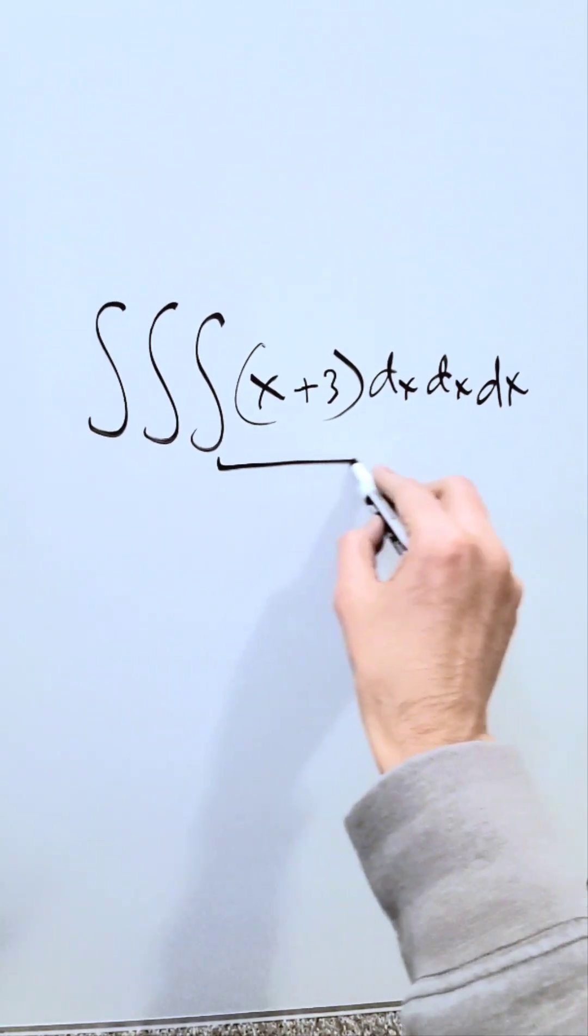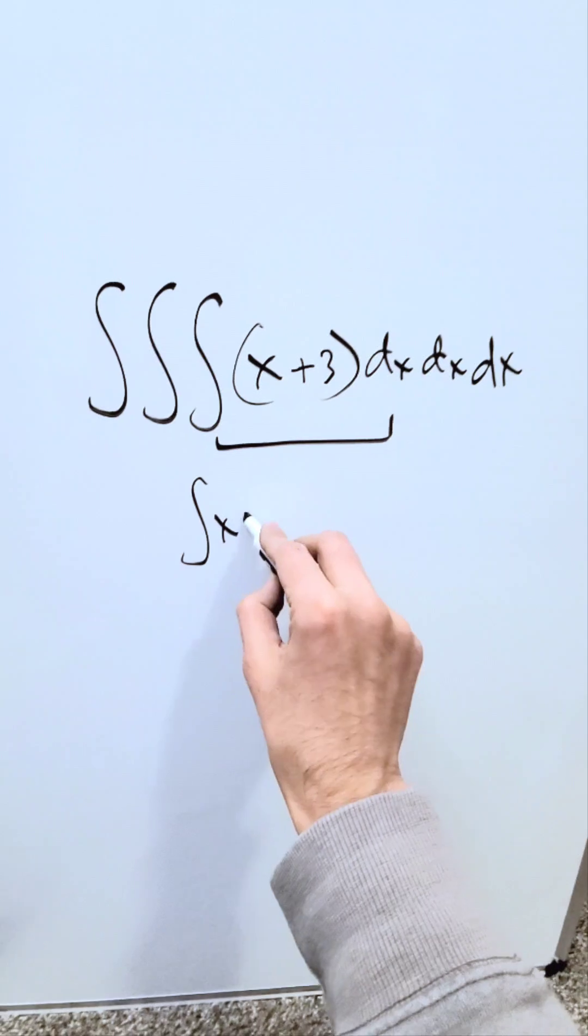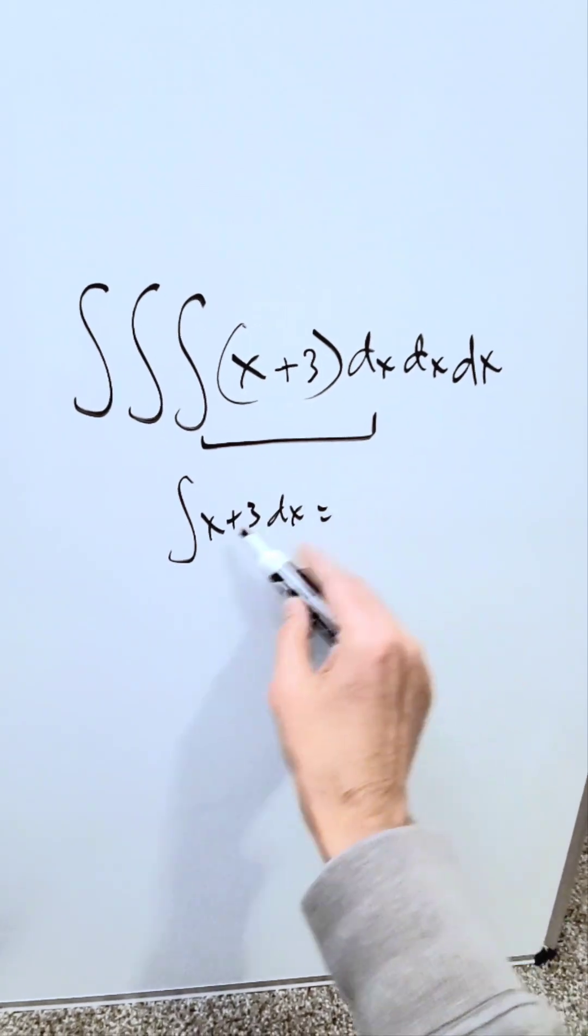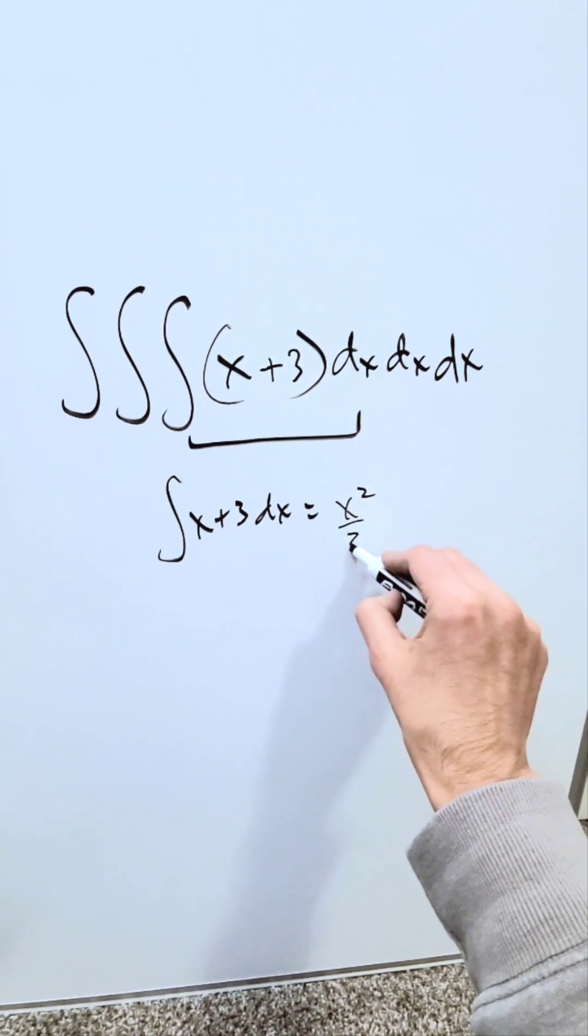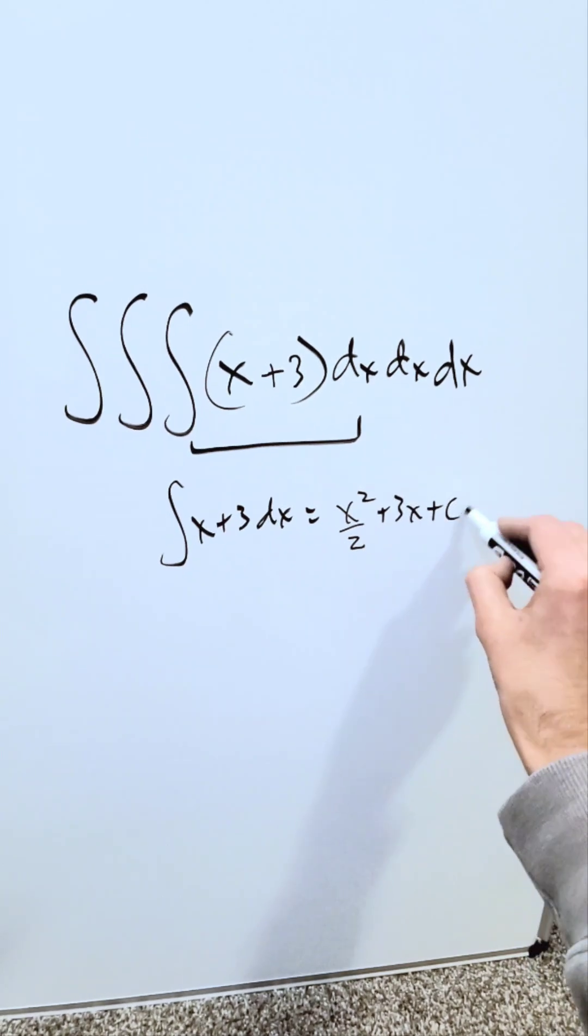Start from inside and work outside. This is what I have: integral of x plus 3 dx. When you integrate this, it's easy. It's polynomials. You'll have x squared over 2 plus 3x plus c.